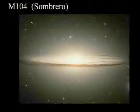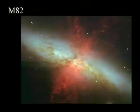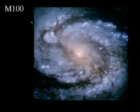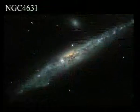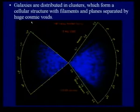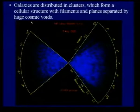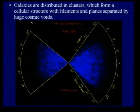Galaxies are distributed in a cellular structure made of filaments, with huge voids of luminous matter in between. We now have observations from several sky surveys which tell us that this is really the structure of the universe as far as we can observe with optical observations.